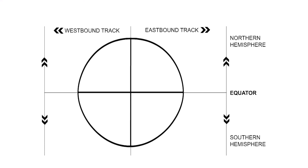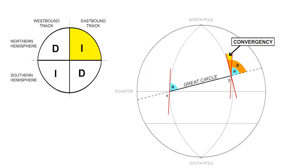We added the letters D-I-I-D to represent the words decrease, increase, increase, decrease. To show that if, for instance, we have an eastbound track in the northern hemisphere, the great circle track angle will increase. Just as it did in this example, it increased from track angle A to track angle B.